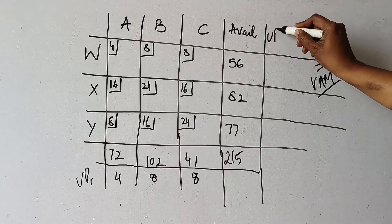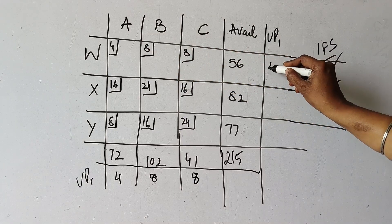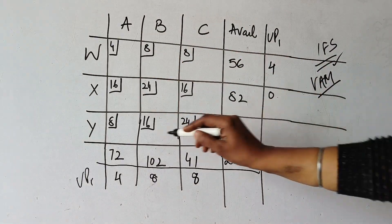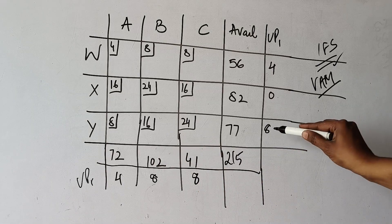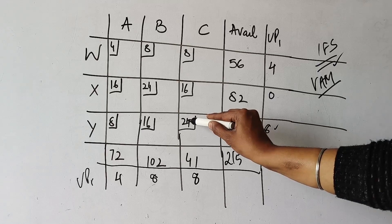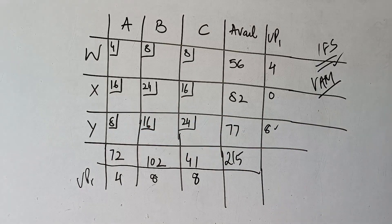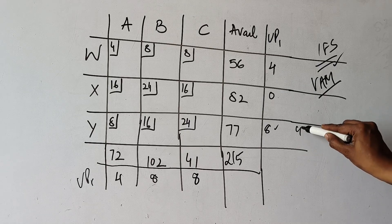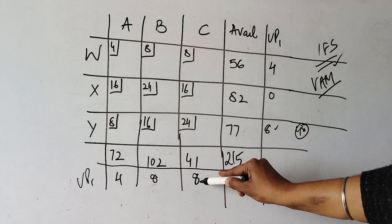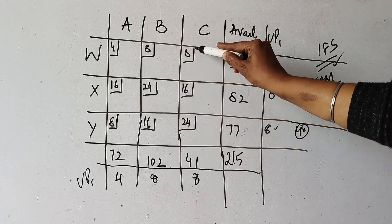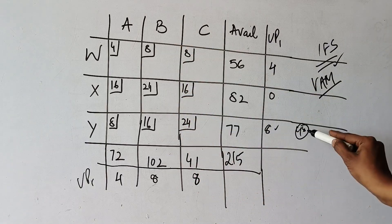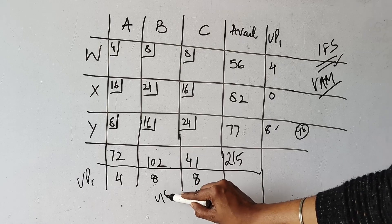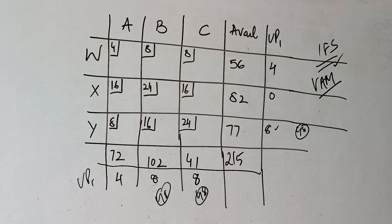Now we calculate UPs on the row side also. Row 1: 4 and 8, difference is 4. Row 2: 16 and 16, difference is 0. Row 3: 8 and 16, difference is 8. We choose the maximum UP — highest is 8, but there is a tie. We go inside the first 8 and add values 24, 16, and 8 — total comes out to be 48. Going inside the second 8, same values 24, 16, 8 — total 48. Going inside the third 8 with 24, 8 — total 48. From all sides, the total is 48, so again a tie.